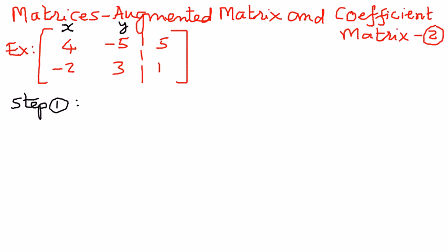So, the way we can write the first equation is 4x minus 5y is equal to 5. That is the first system of linear equation. And the second system of linear equation is negative 2x plus 3y is equal to 1. That is the second equation.